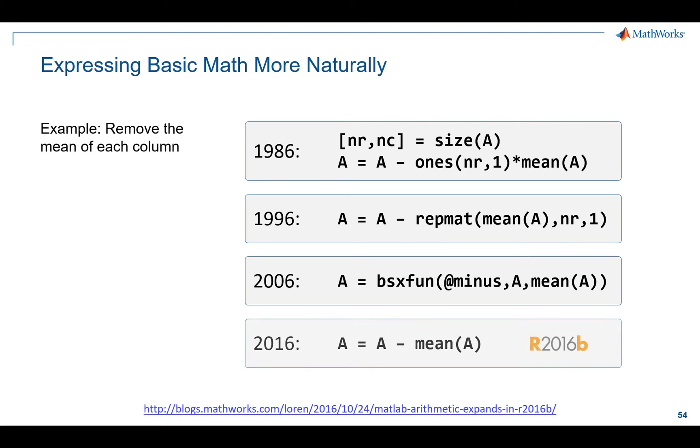So I'm happy to say that in 2016 B, we implemented something called Implicit Expansion. And really that has to do with taking care of doing that expansion, doing the math under the hood, so you can write the code like you think about it. Take an array A, subtract the mean of A from A. Done. So you write it like you think about it.